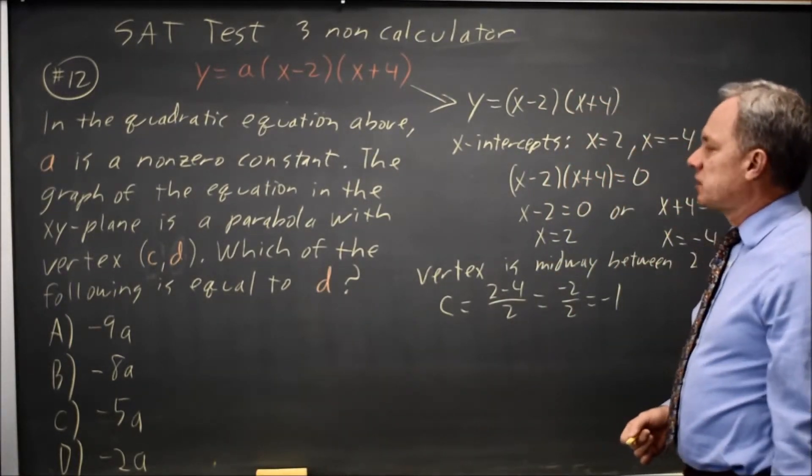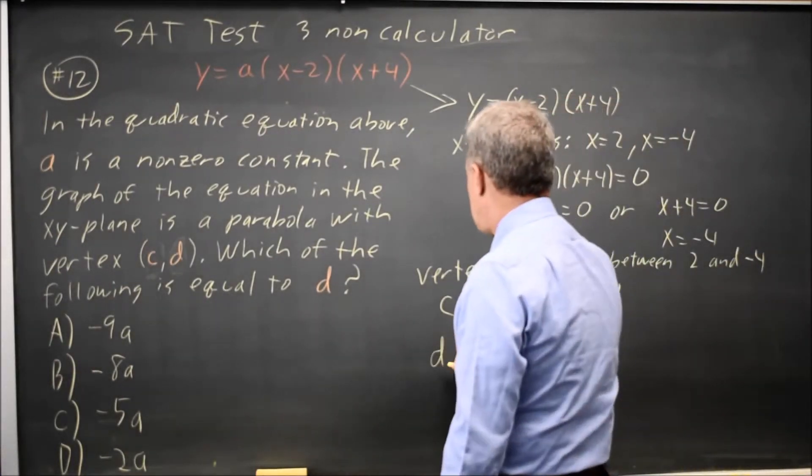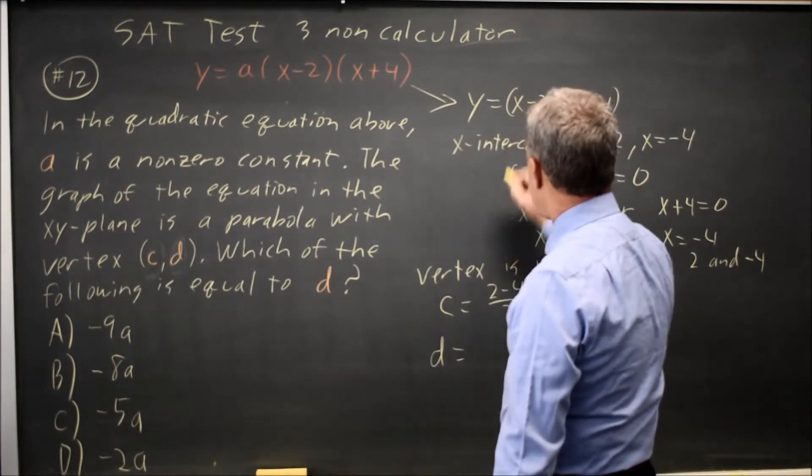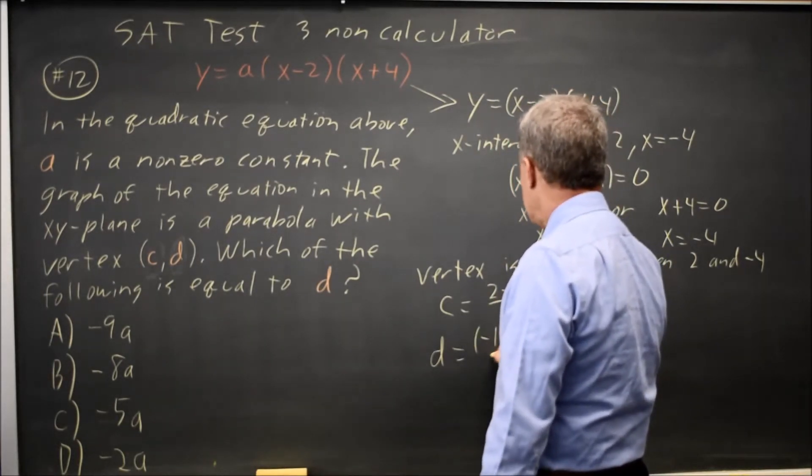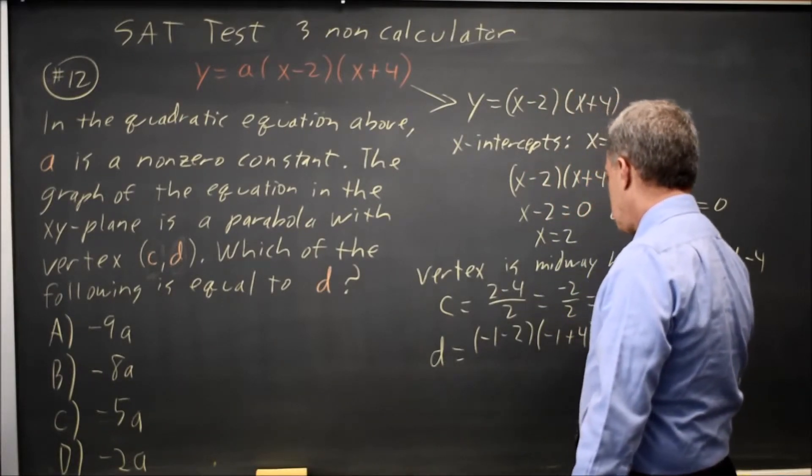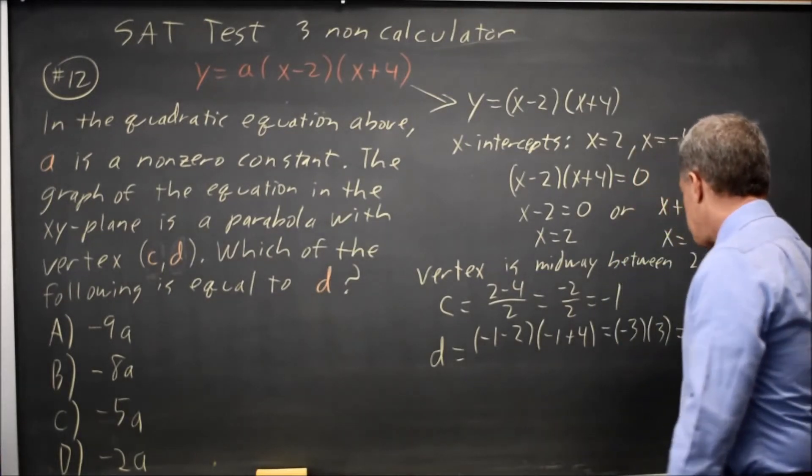And now I can find the y-coordinate, which is d, by substituting negative 1 for x: (negative 1 minus 2) times (negative 1 plus 4), which is (negative 3) times 3 equals negative 9.